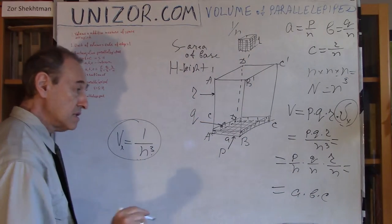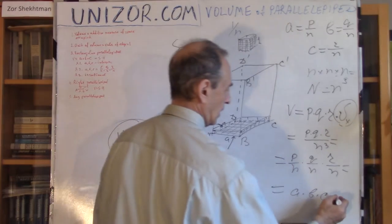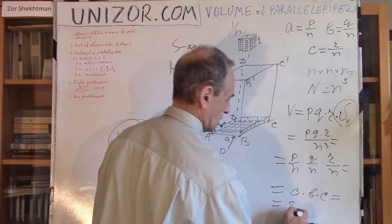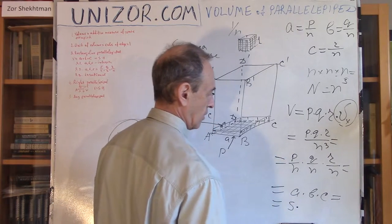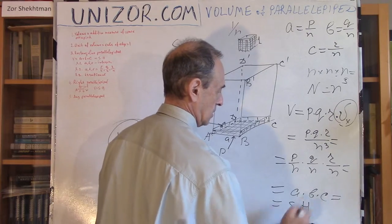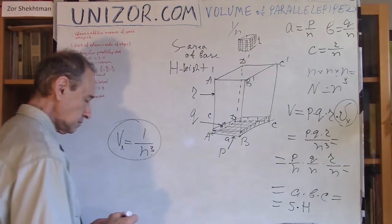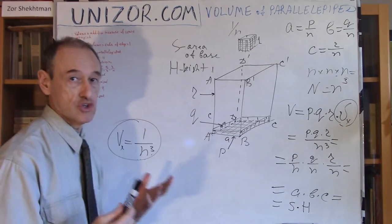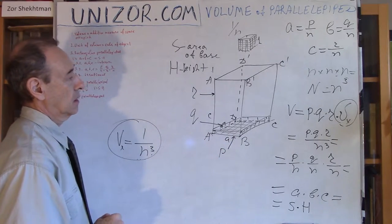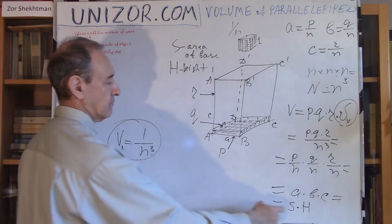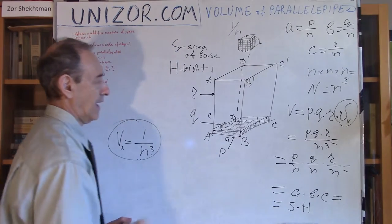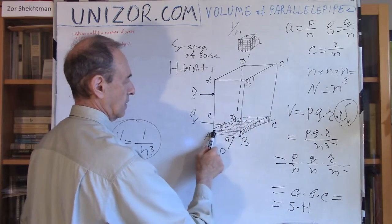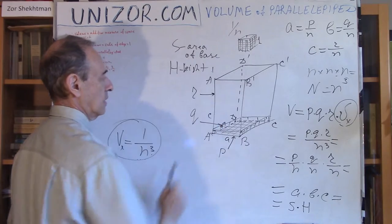As you see, we have exactly the same formula as with integer A, B, C — the volume equals the area of the base times H. So even with rational A, B, and C as edges of the rectangular parallelepiped, the volume is still expressed as the product of the three lengths, or as area of the base times height.